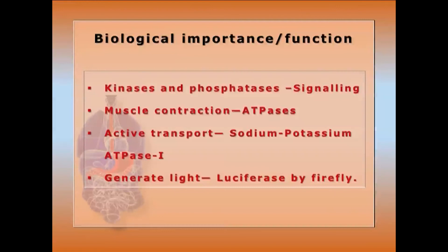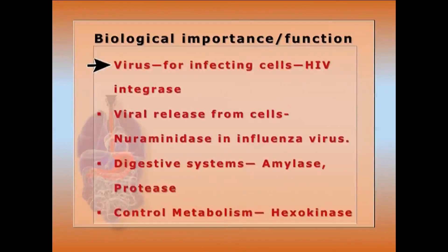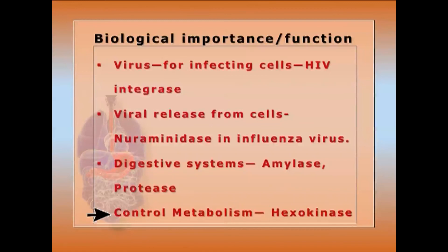Biological importance: kinases and phosphatases act simultaneously in signaling pathways to switch on or off cascades of reactions. ATPase is needed for muscle contraction and active transport via the sodium-potassium ATPase. Luciferase generates light in fireflies. HIV integrase is needed for viral infection, and neuraminidase is important for influenza virus release. The digestive system uses amylase and protease for digestion, and metabolism is controlled by phosphofructokinase and hexokinase.